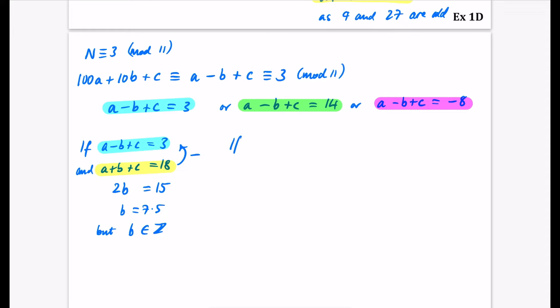So now we're going to do our next one. If A minus B plus C is equal to 14 and A plus B plus C is equal to 18. If I do the same thing of subtracting them, I will get 2B is equal to 4, which means that B is equal to 2. Great. That's going to be one that we can use.